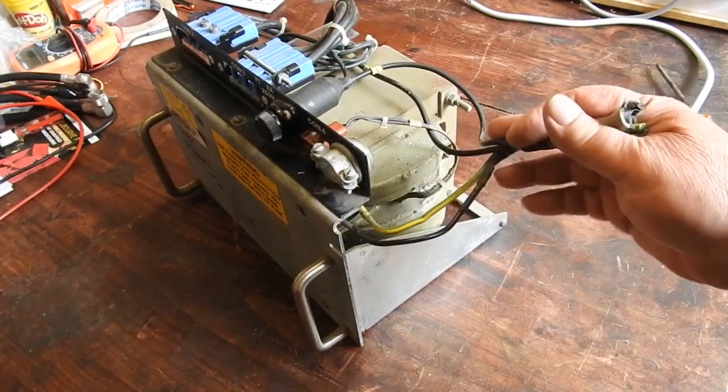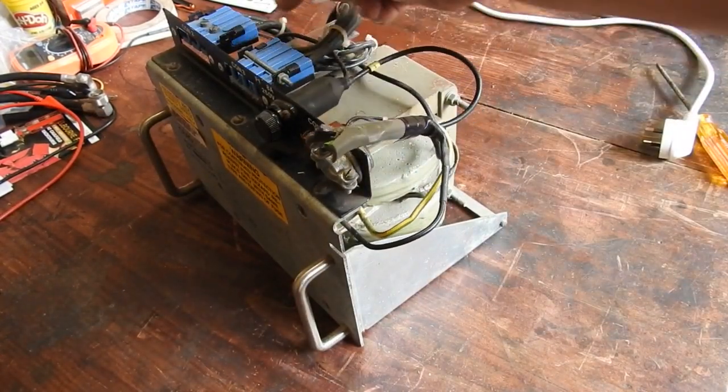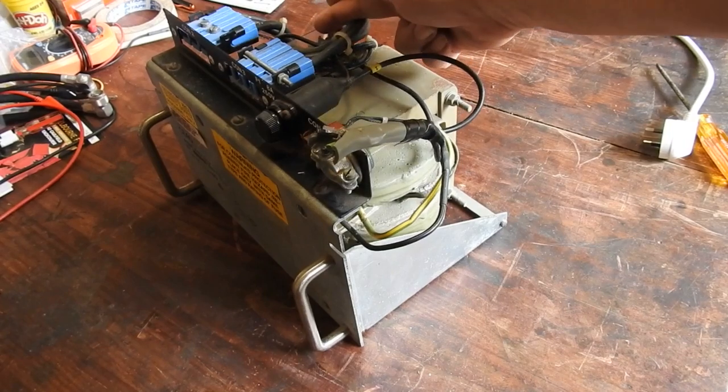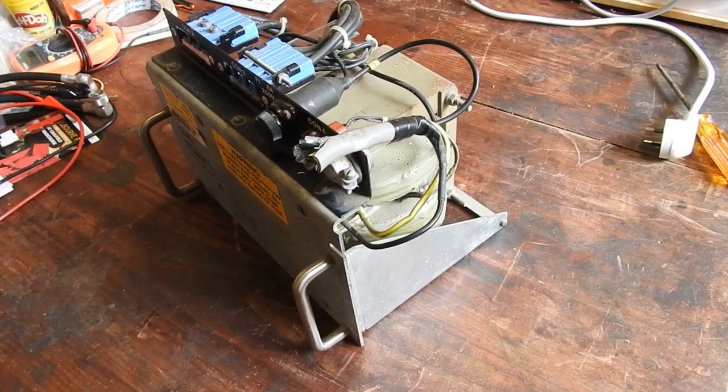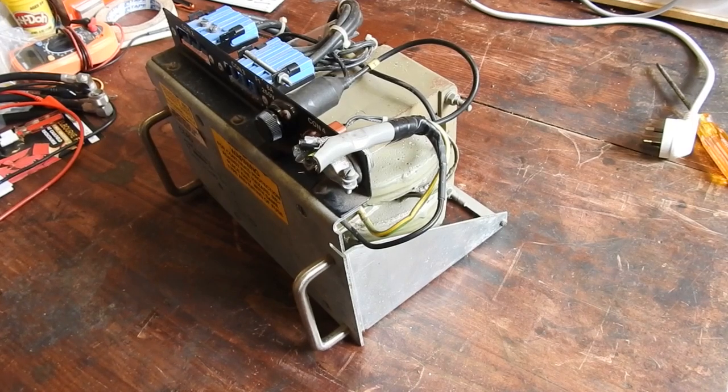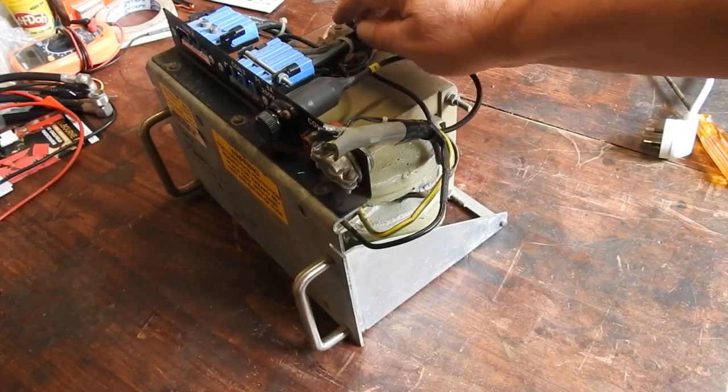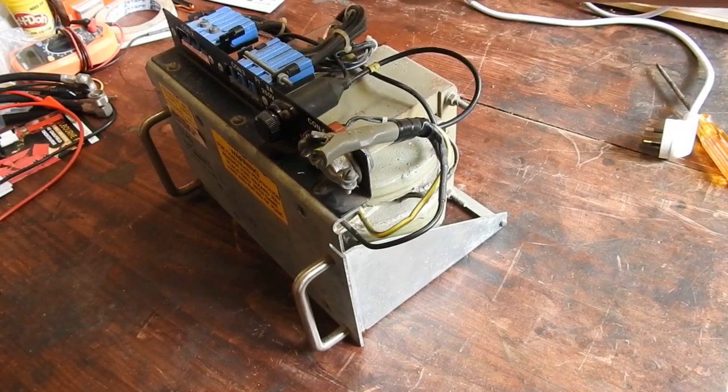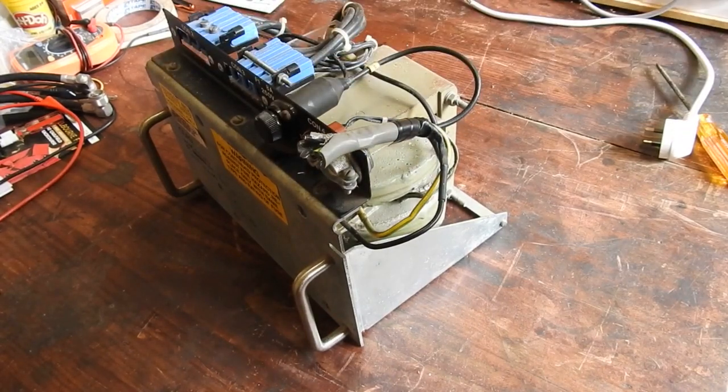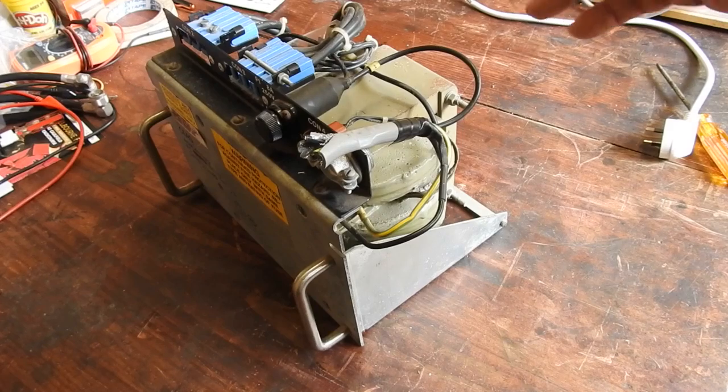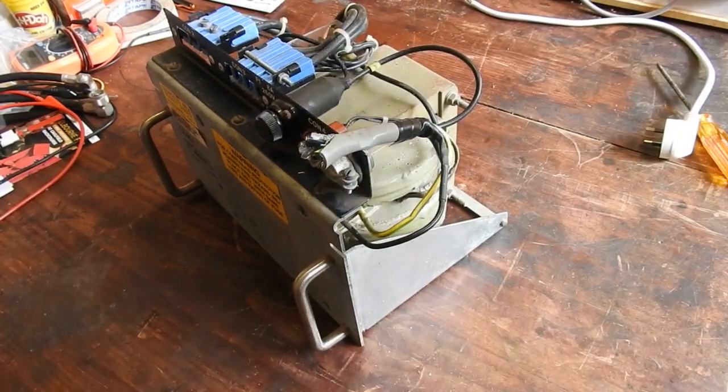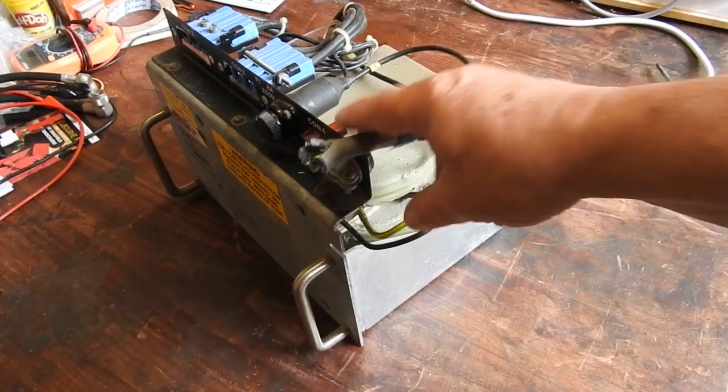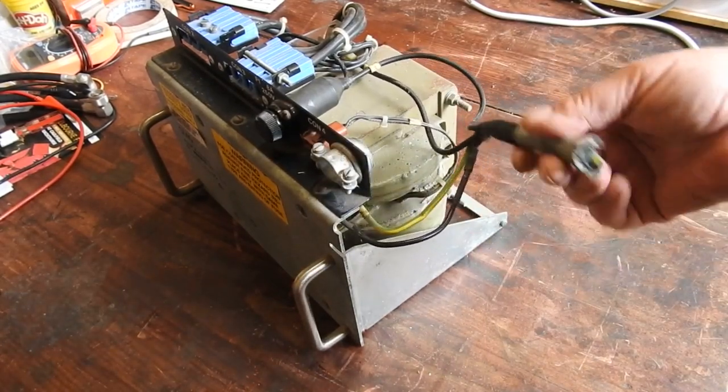And look at the secondary windings. They're monsters too so still probably way over engineered just like this is. What's different about this? Well, typical of IBM they have transformers with multiple input tappings so you can set it to the appropriate local mains voltage. I don't know if this goes down to 120 or if all those tappings are around the 220, 240, 260 volt range. But the lowest one might be 120. We'll find out by probing it later.